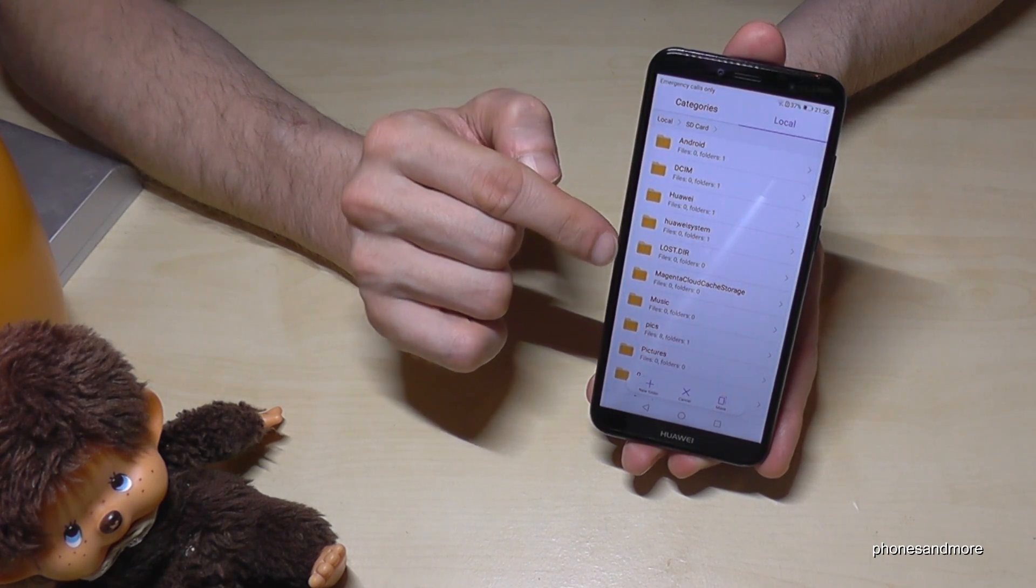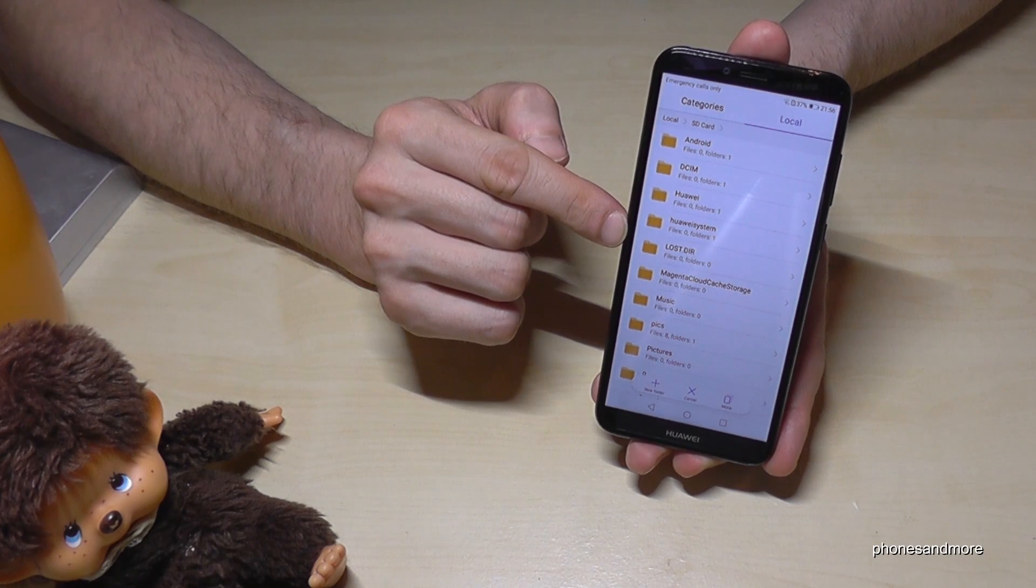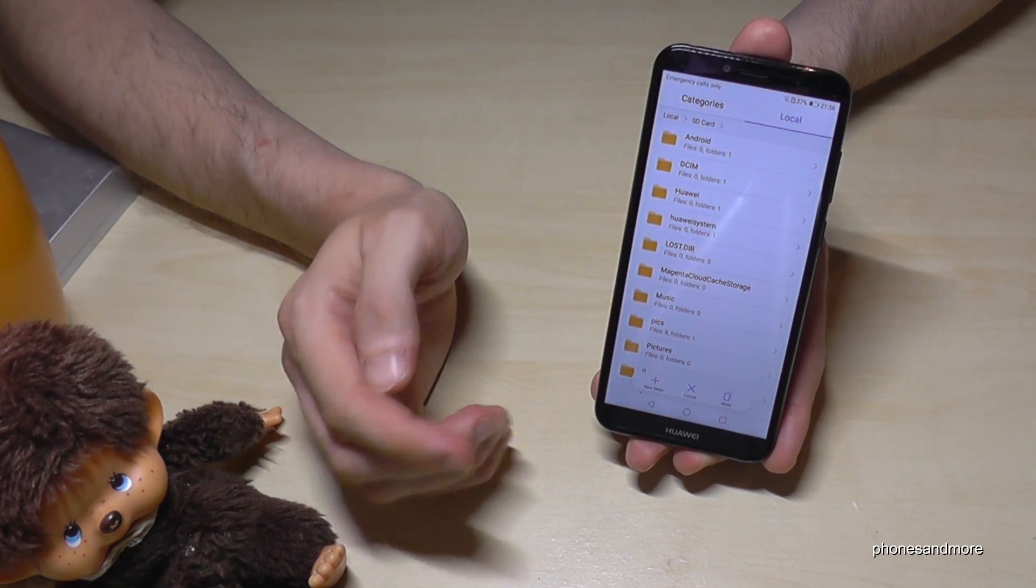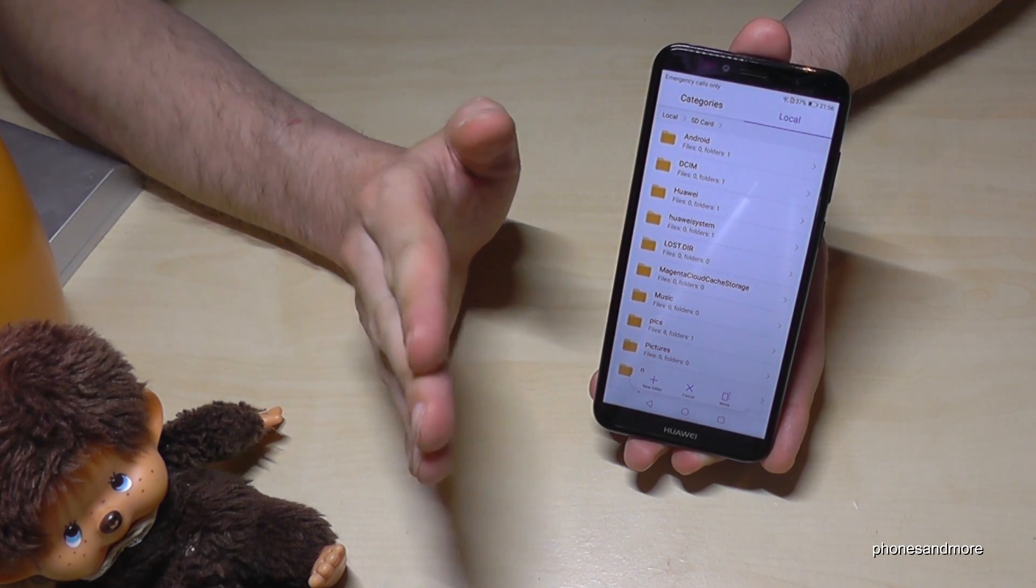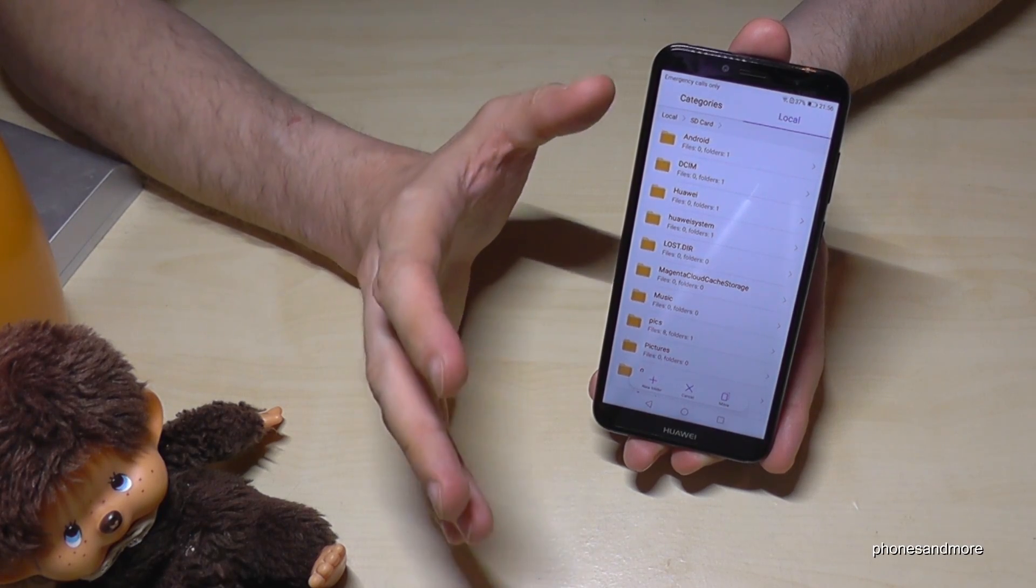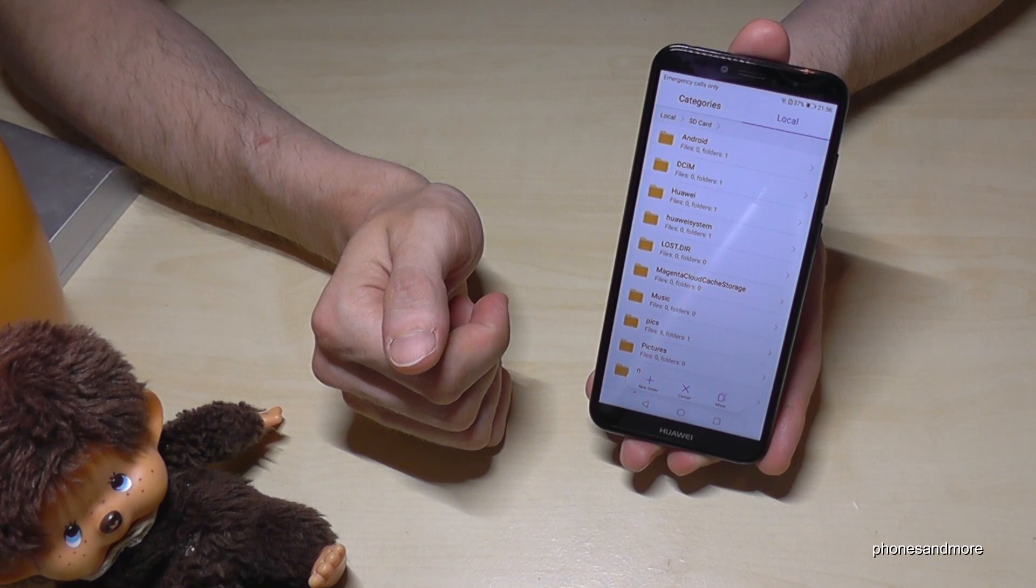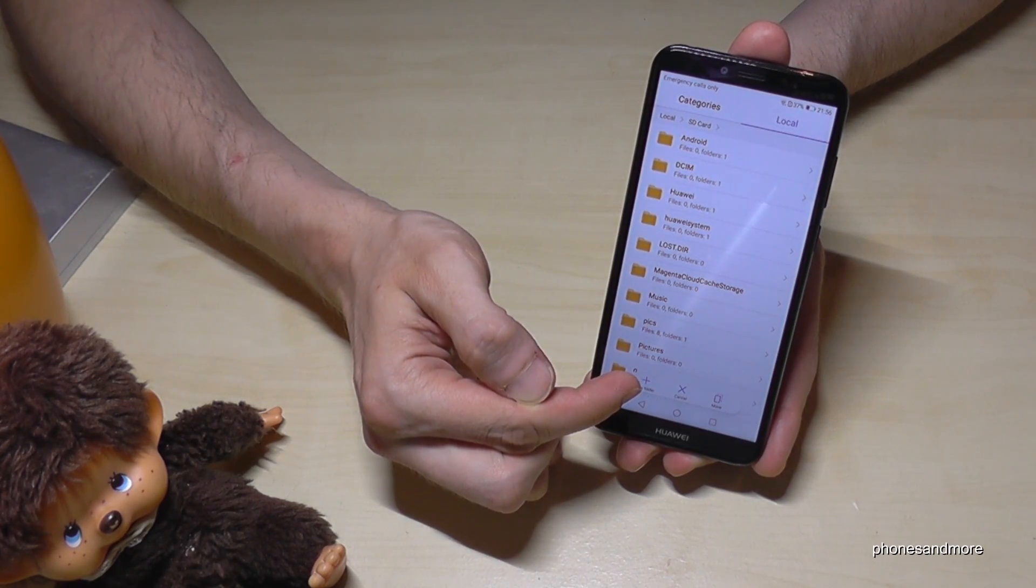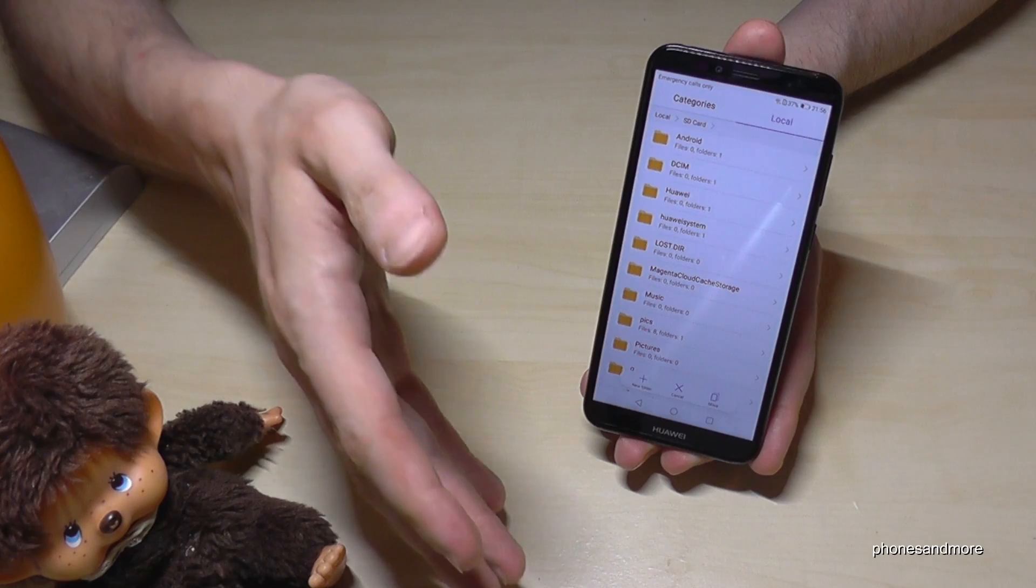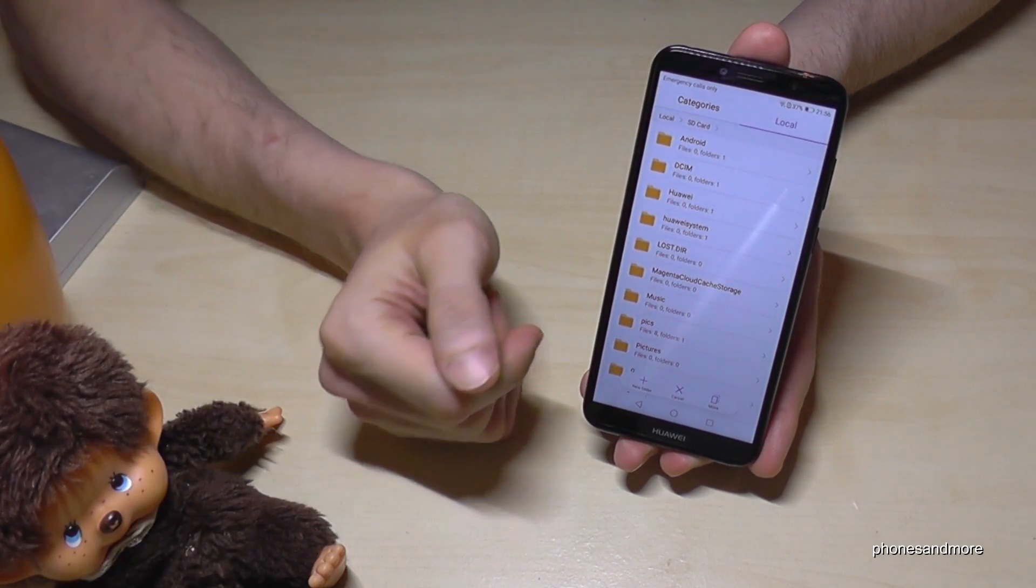I've created also some folders already on my SD card in case you bought a brand new and have no folders. So I suggest you to make some folders because it's a better organization later on the microSD card. If you want to create folders, just go on the plus here and name them like pictures or videos or documents or something like this.